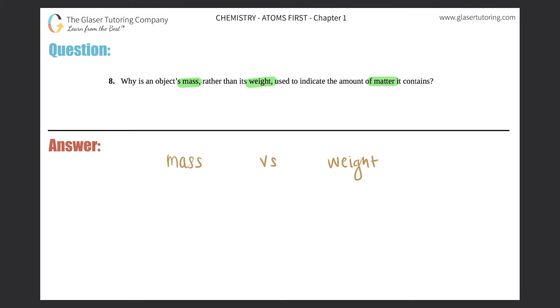One of these is the better way of indicating the amount of matter an object has and the other one not so great. Turns out that mass is the better way.